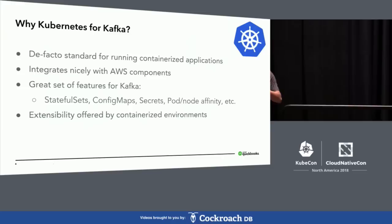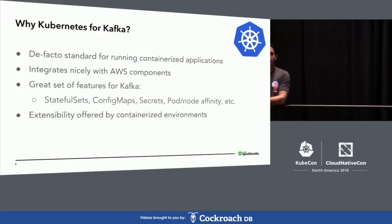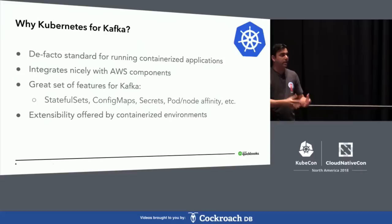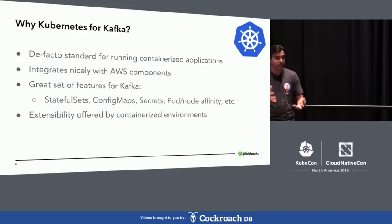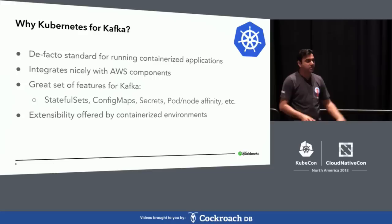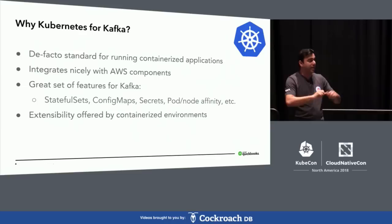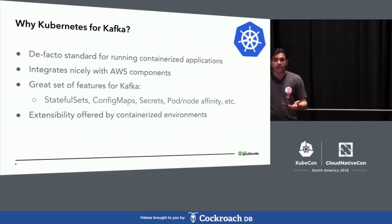There are several constructs within Kubernetes which are great for Kafka. StatefulSets give you a pod and a volume together as one unit, and you can create N replicas spread across multiple zones. ConfigMaps let you share Kafka's complex configuration across all brokers — create one config map and mount it inside all your brokers. Secrets were important for SSL: create an SSL certificate, put it into a Kubernetes secret, and mount it in all brokers.